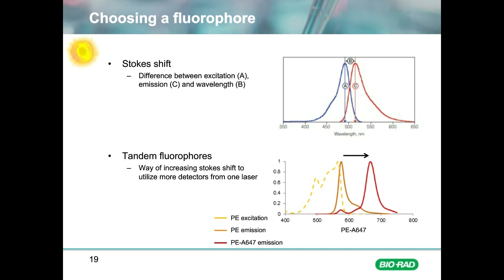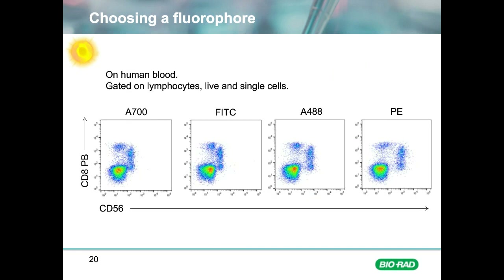Fluorophore brightness depends on how many photons a fluorophore emits when excited by a laser, and also the conversion rate of these photons when they hit the detectors and are converted into a digital signal. In the plot shown of CD8 and CD56 staining, Alexa Fluor 700, which is a dim fluorophore, does not manage to separate the CD56-CD8 double population very well. FITC, which is brighter, shows some improvement, as does Alexa Fluor 488, which is even brighter. PE, one of the brightest fluorophores when excited by a yellow-green laser, gives the best separation of the CD56-positive population. In this way, you can rank the brightness of fluorophores.